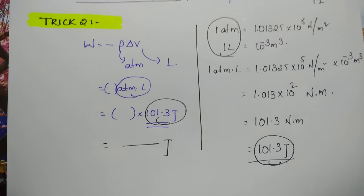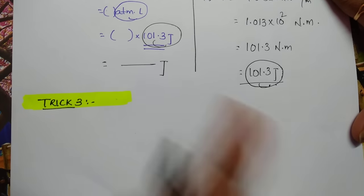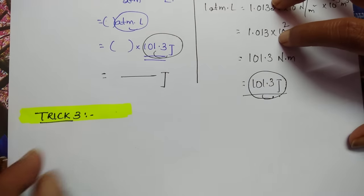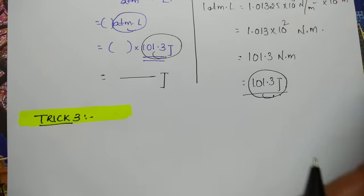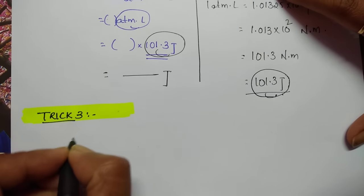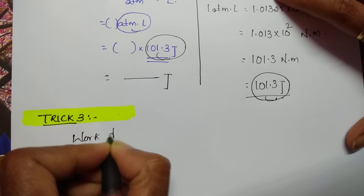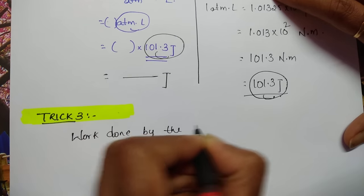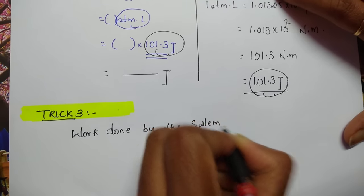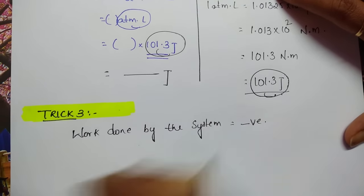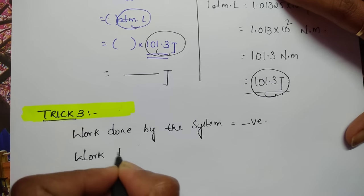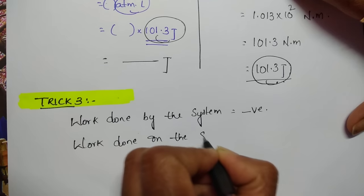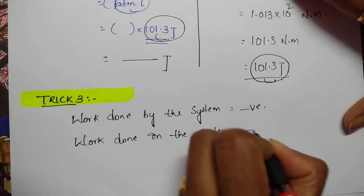Let us see trick number 3. Whenever you solve questions based on work done, you may confuse the sign convention, because in physics and chemistry the signs are different. In chemistry: work done by the gas or by the system is negative, and work done on the gas or on the system is positive.